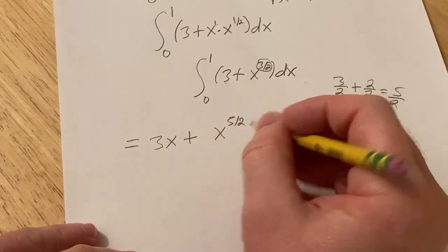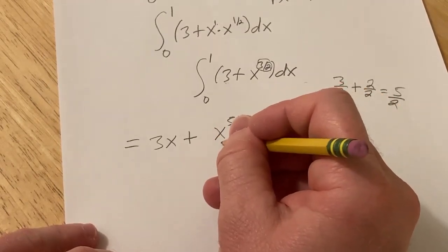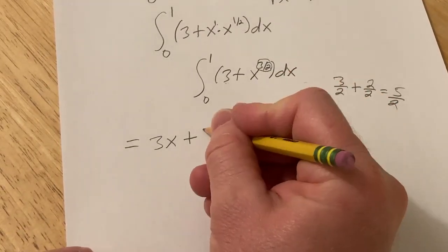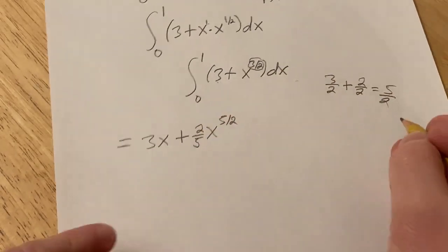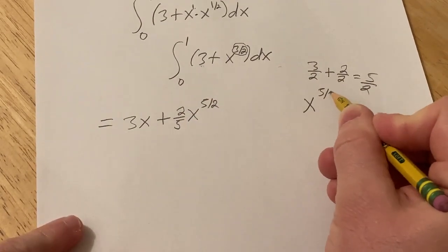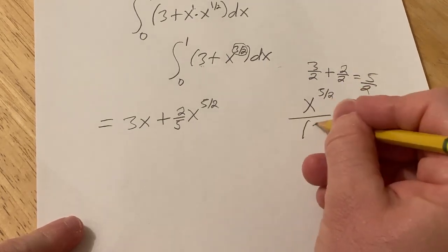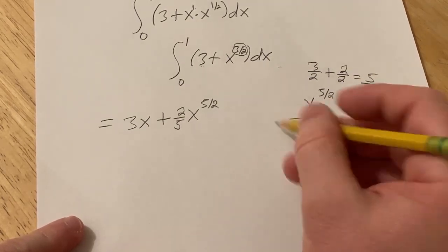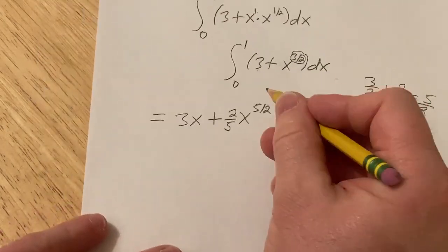But since we're dividing by 5/2, we're really multiplying by the reciprocal, so I'm just going to put a 2/5 here. Again, the step I skipped was this one—it's really x to the 5/2 over 5/2, but you just basically do this. And we're going from 0 to 1.